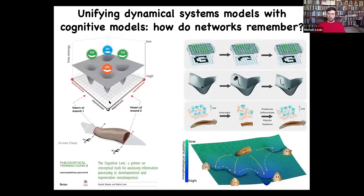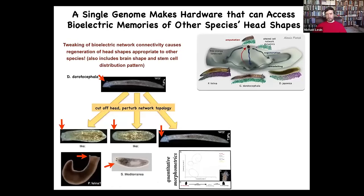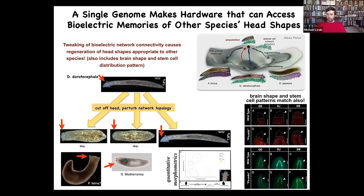Interestingly, it's not just about head number — the electrical circuit also controls head shape. Here's a nice triangular-headed species. If you cut off that head and confuse that bioelectrical network for about 48 hours, they will end up making flat heads like P. felina, or round heads like S. mediterranea, in addition to its normal head. Not only the head shape, but actually the distribution of stem cells and the brain shape will be like these other species — which are between 100 and 150 million years distant from this one.